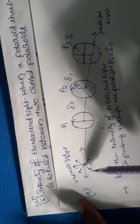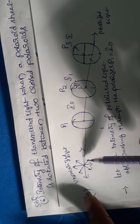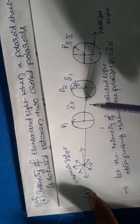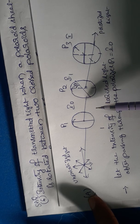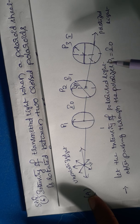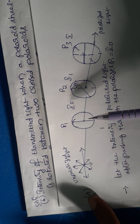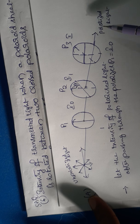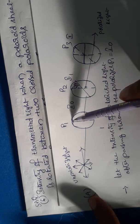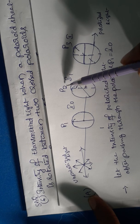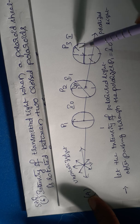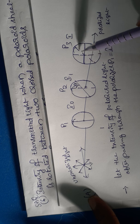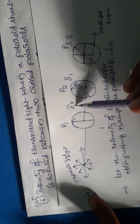In unpolarized light, the electric vectors vibrate in all directions. When unpolarized light passes through a polarizer, it becomes polarized light. Here we have three polarizers P1, P2, and P3. After passing through them, the electric vectors no longer vibrate in all directions — only in one direction perpendicular to the direction of the wave. Each polarizer P1, P2, and P3 has its own axis of rotation.